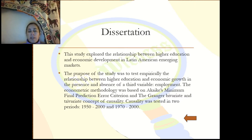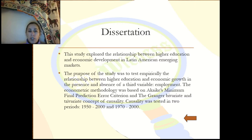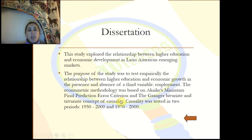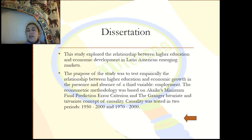I was thinking that employment could be one of the variables that controls or modifies the effects of higher education on economic growth. This study explored the relationship between higher education and economic growth and development in Latin American emerging markets, using my own experience in the region. The purpose was to test empirically the relationship between higher education and economic growth in the presence and absence of employment as a third variable. The econometric methodology was based on a CAIC minimum final prediction error criteria and Granger causality.